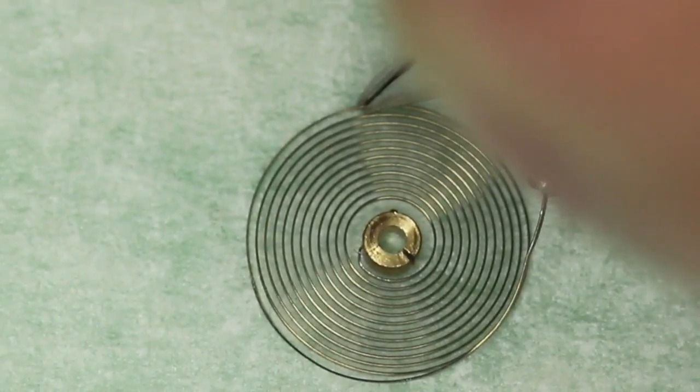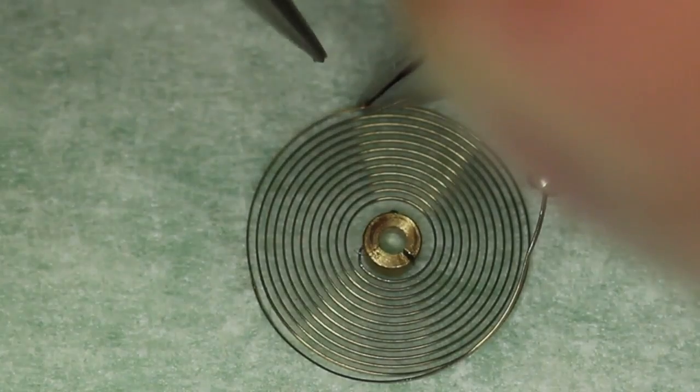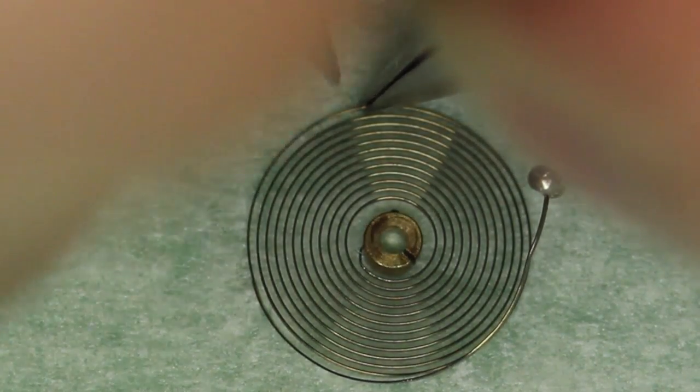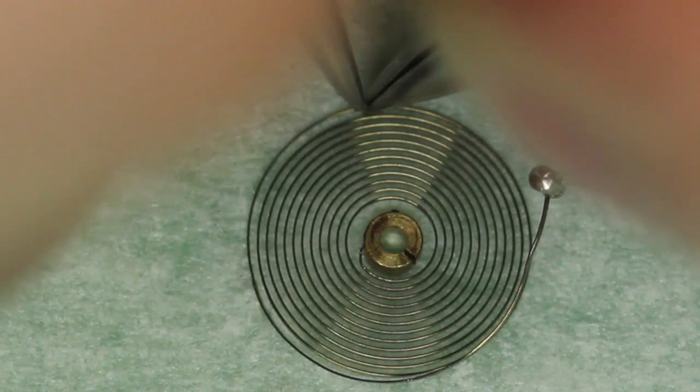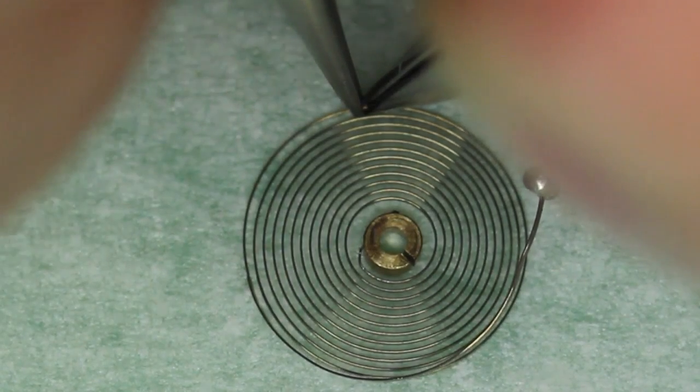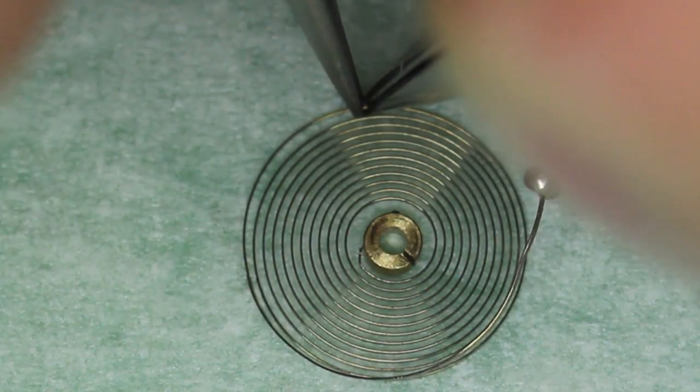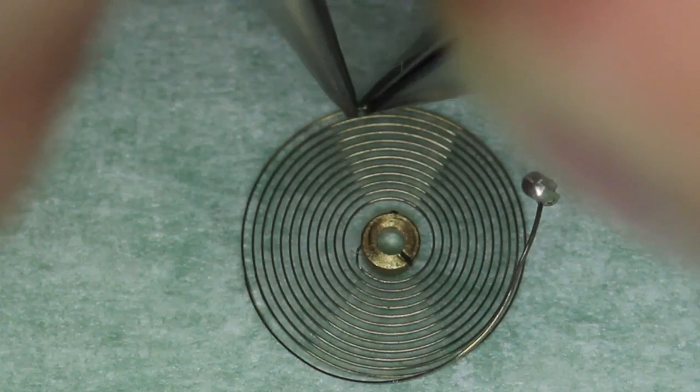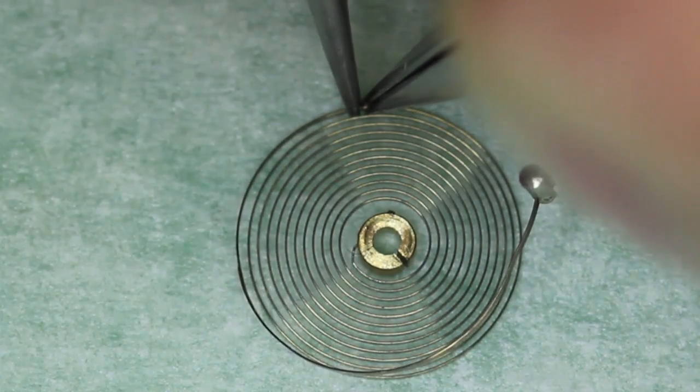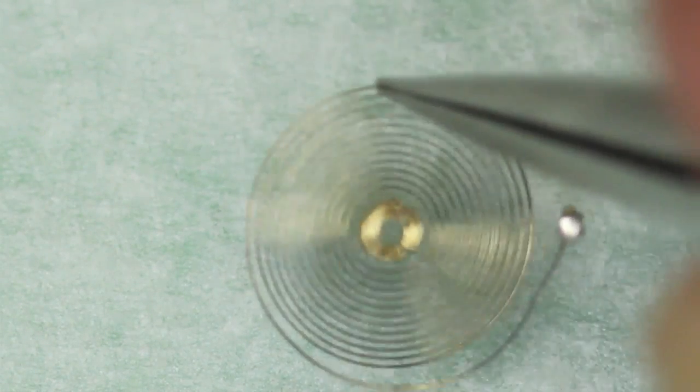And what I need to do is grip firmly the hairspring with one pair of tweezers, and with the other pair of tweezers I need to lift, and bear in mind that the tweezers are absolutely vertical. And I'm twisting the hairspring upwards, and I'm doing it very gently. And it didn't really require much effort.